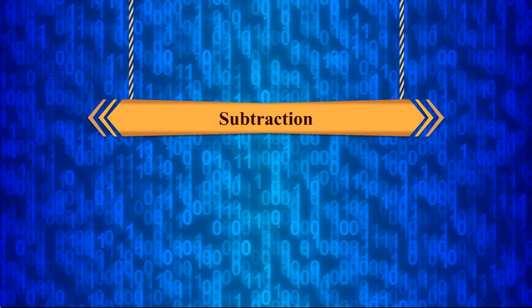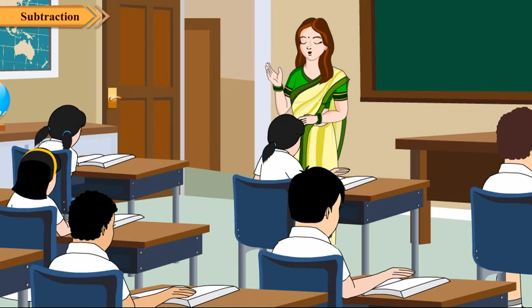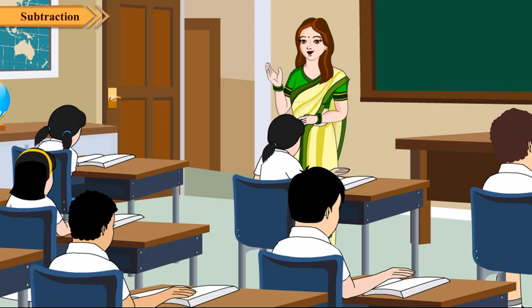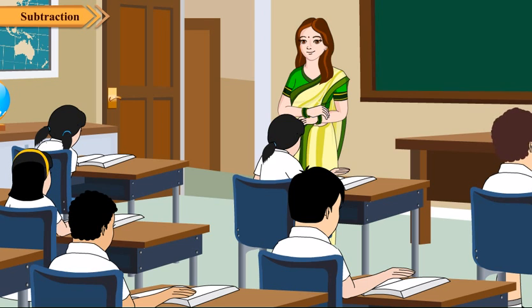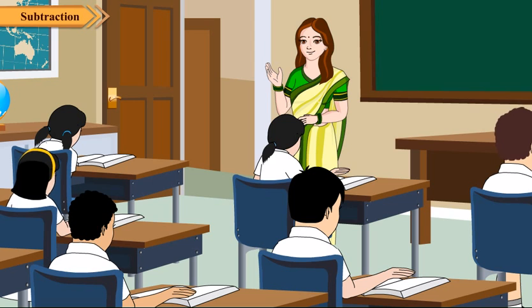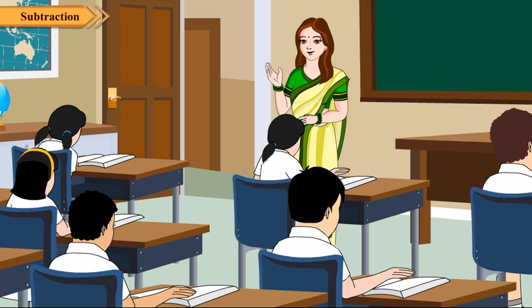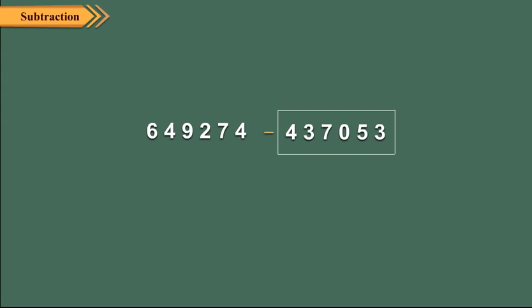Subtraction. You have learnt subtraction of numbers up to 4 digits in the previous class. Subtracting larger numbers is very similar to subtracting smaller numbers. Here also we begin with the ones place. Let us subtract 437053 from 649274.